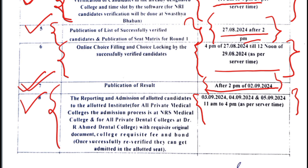The admission reporting period is 3 to 5 days. In the 21st month, you will get your allotted college.